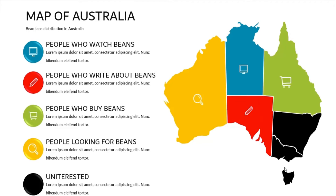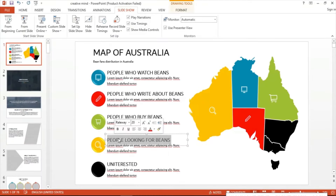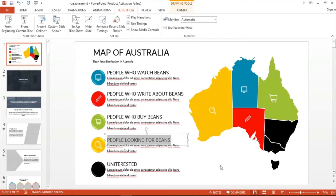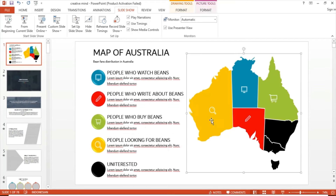Now I want to give the yellow portion of our map a pop-up text, just like the rest of the colors. In order to do that, we first copy the text the yellow portion represents, which is 'people looking for beans,' on the left side legend of the slide. Then we left click on the yellow part of the map and hit Control + K.